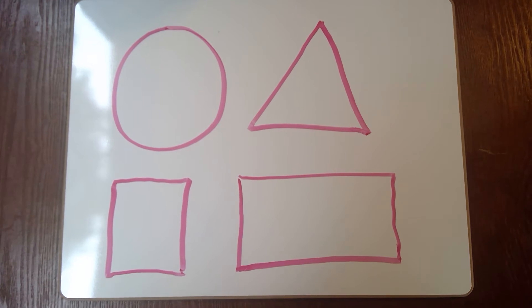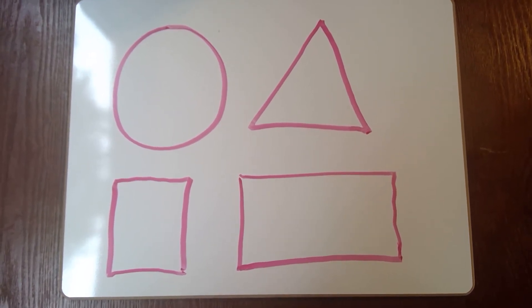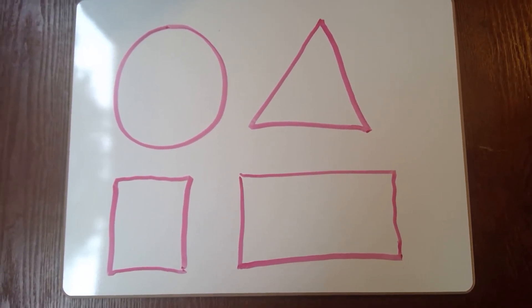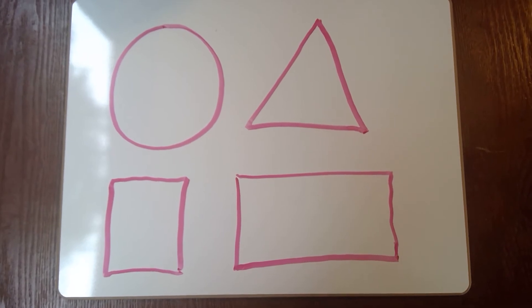So for example, if you started with the triangle, you would make sure to point out that it has three sides and you could point out the three different points.